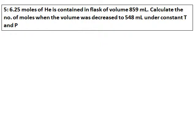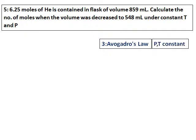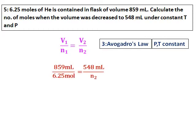Avogadro's law question: 6.25 moles of helium is contained in a flask of volume 859 milliliters. Calculate the number of moles when the volume is decreased to 548 milliliters at constant temperature and pressure. This uses Avogadro's law — the relationship between volume and moles when P and T are constant: V1/N1 = V2/N2. The volumes and initial moles are given; substitute all values and solve for N2.